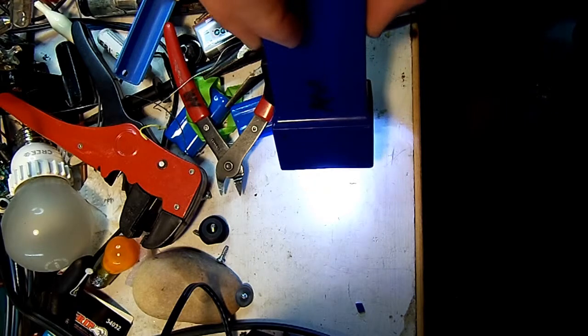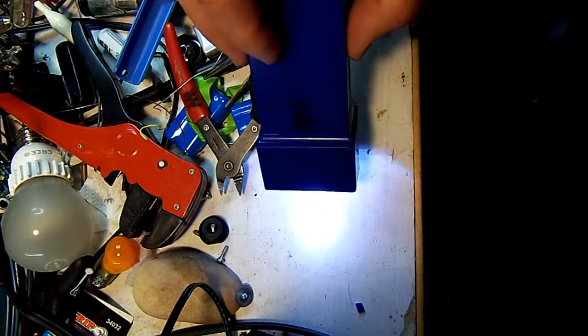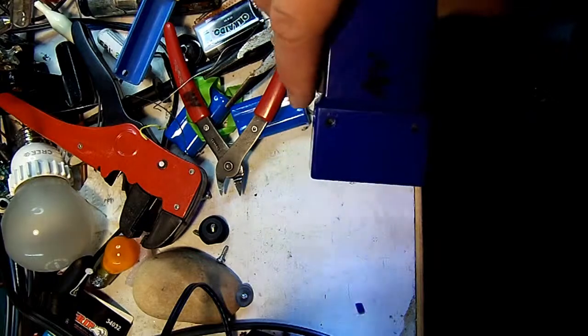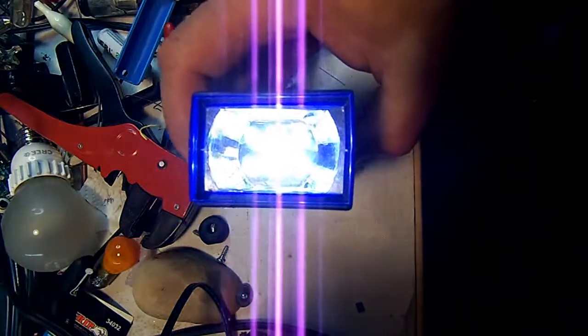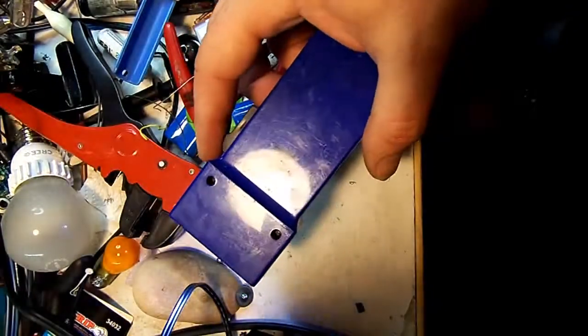You can only see really the two in the light on the table there. But anyways, two Cree LEDs and the other four are still the original Chinese. But high-capacity batteries. Solar flashlight back in use.